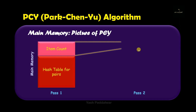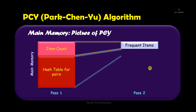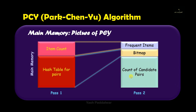In the second pass, the item count boils down to the frequent items — that means only those items satisfying the minimum threshold condition are taken forward, and this takes lesser memory compared to the item count space. The hash table for pairs from pass one boils down to a bitmap, meaning all the pairs generated based on item counts are mapped to a bitmap in the next pass. And finally we have the count of the candidate pairs — the space for the final pairs selected as candidate pairs and their count is stored.